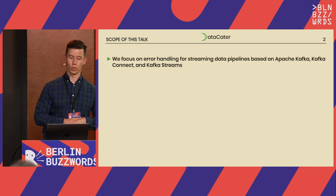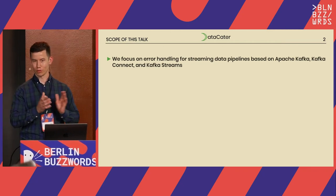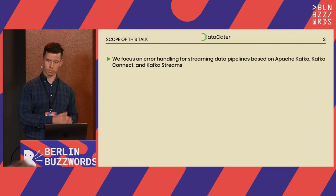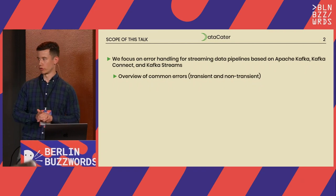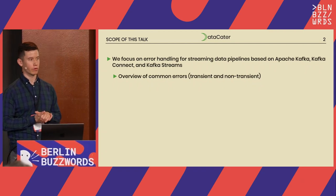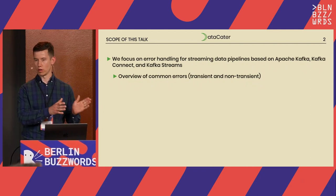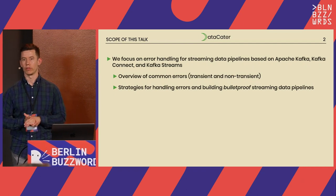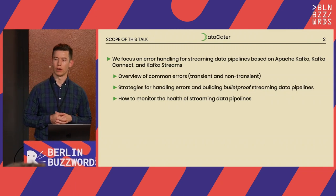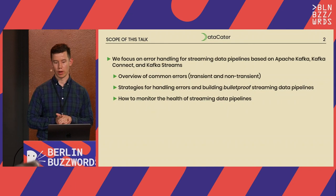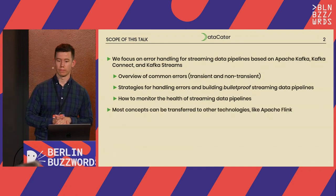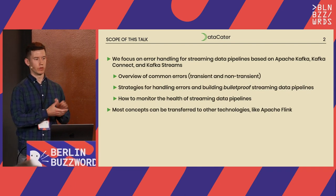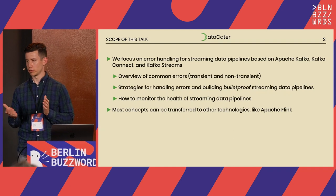In this talk we will focus on error handling for streaming data pipelines based on technologies like Apache Kafka, Kafka Connect, and Kafka Streams. We will start with a short overview of potential errors — both transient and non-transient — discuss strategies for handling them, and cover different ways of monitoring the components of a streaming data pipeline. Most concepts can be transferred to similar technologies like Apache Flink.